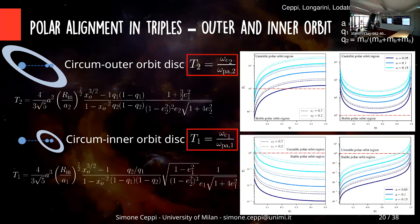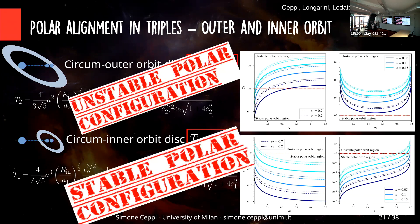We did the same analysis for the circum-inner binary disk, and what we find is the opposite: in most of the parameter space, T is below unity. So polar alignment is possible around inner binaries of a hierarchical system. We concluded that a polar orbit around a hierarchical triple is not stable, while a polar orbit around the inner binary of a hierarchical triple is stable — polar alignment can occur there but not around the outer orbit.